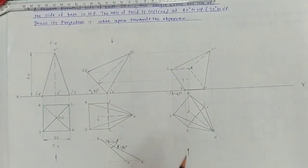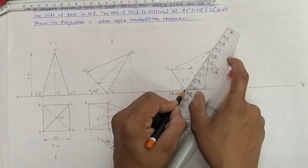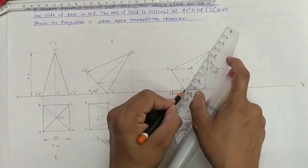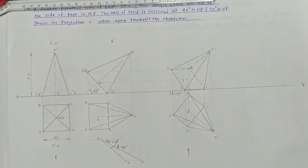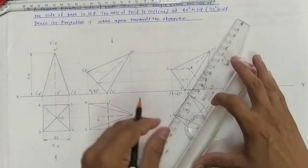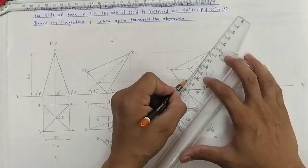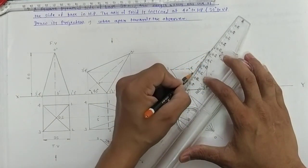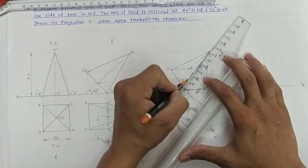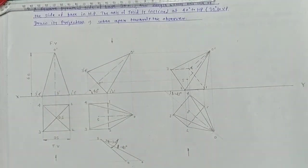And 2 to O is nearer to the observer, therefore it is a dark or visible line. Lastly, join the axis. This is your final position of the square pyramid.